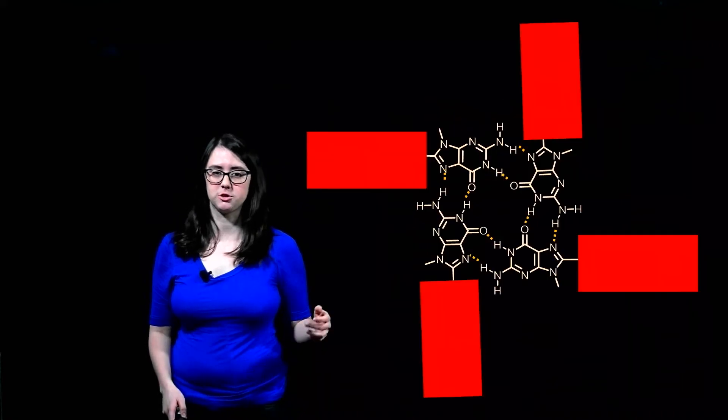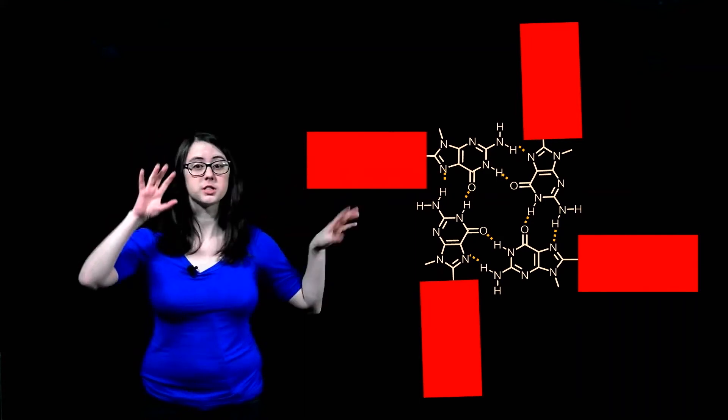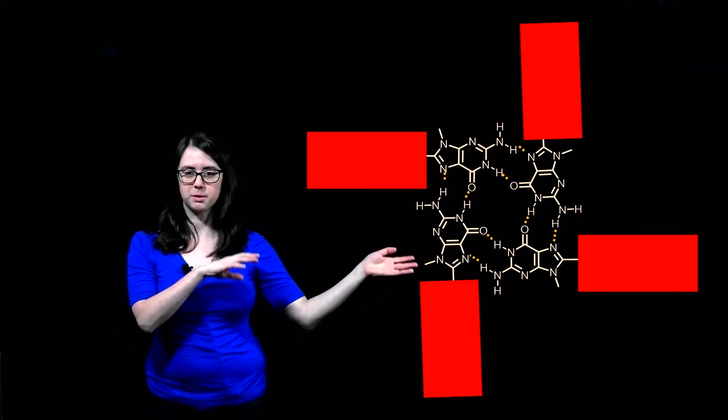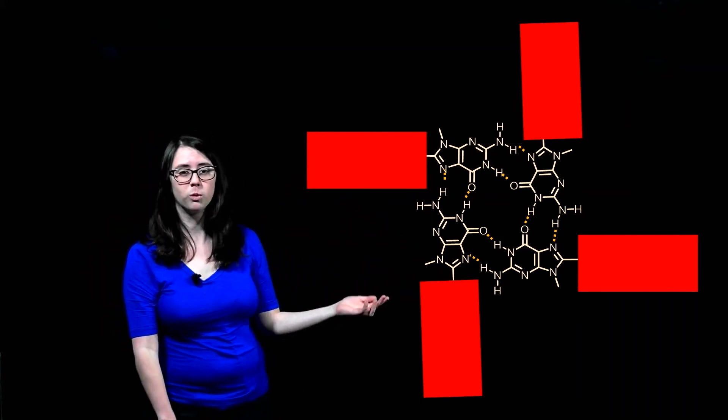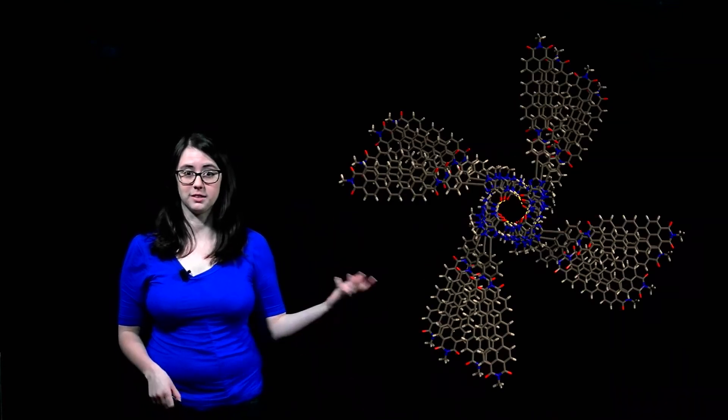For instance, it can make a structure that looks like this. Here, the guanine has formed that quadruplex, but the other pieces are still attached to it. And while we sometimes have structures that look like this, more often they're multiple layers and end up looking something like this.